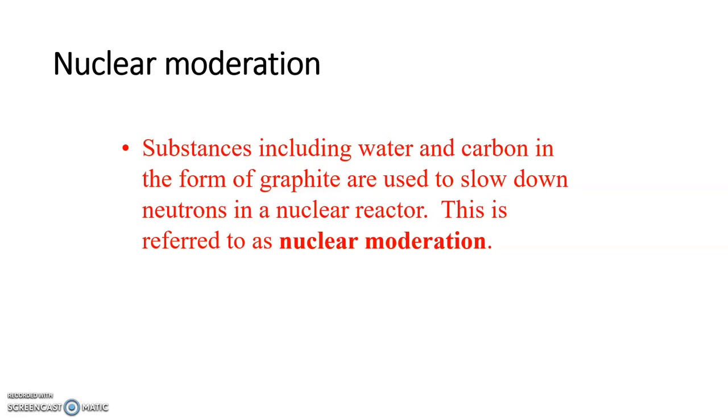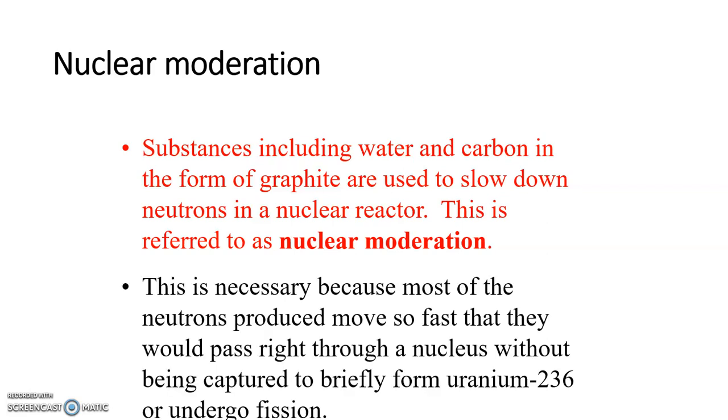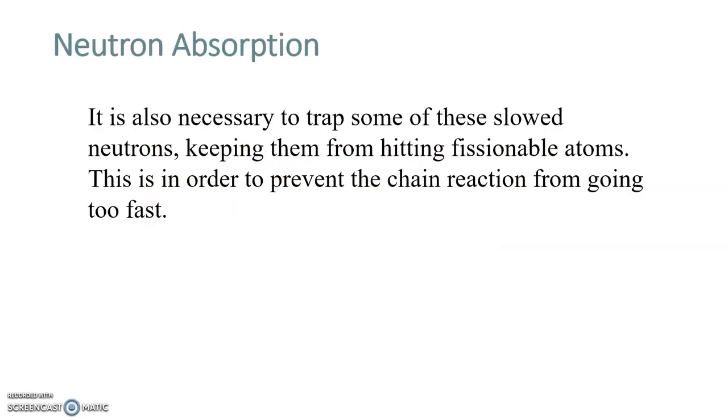Nuclear moderation basically involves slowing the neutrons down. They'll use substances like water and carbon. If they didn't, the neutrons are going so fast they would just pass right through the nucleus. If you had the conventional view that the neutron hits a nucleus and splits it open, you might say 'so what.' But if the neutrons are going too fast, they'll go straight through the nucleus, never form that uranium-236, and the fission won't happen. So nuclear moderation is a pretty important thing - it's just slowing the neutrons down.